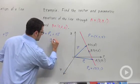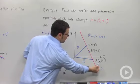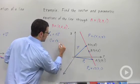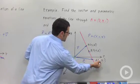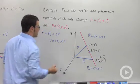So v is going to be (5 minus 2, 4 minus 3, 6 minus 1), which gives us (3, 1, 5). That's our direction vector.